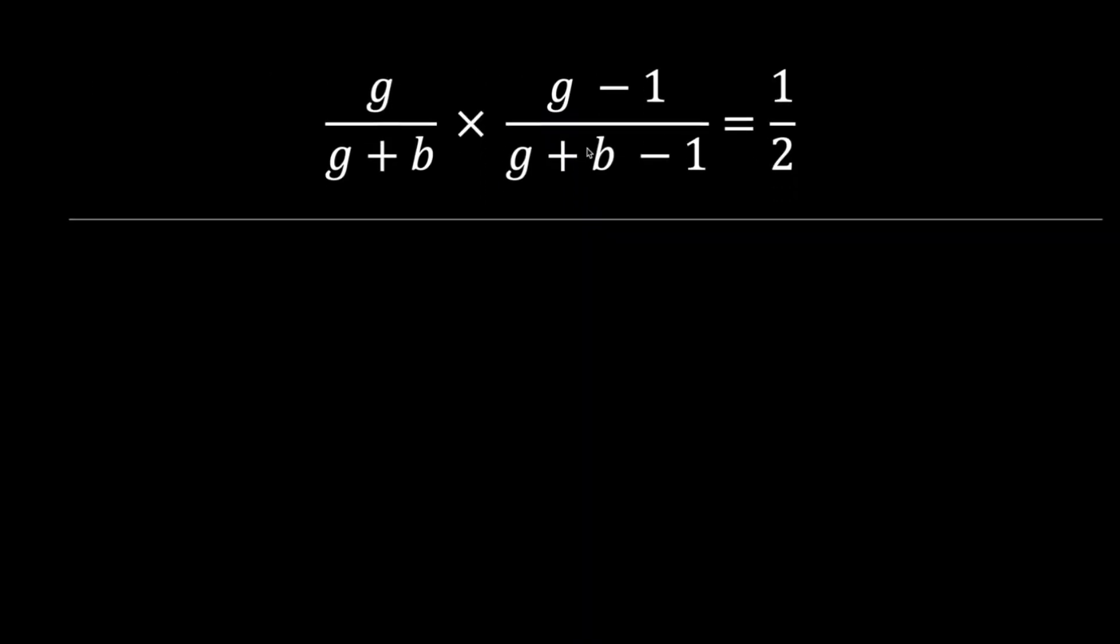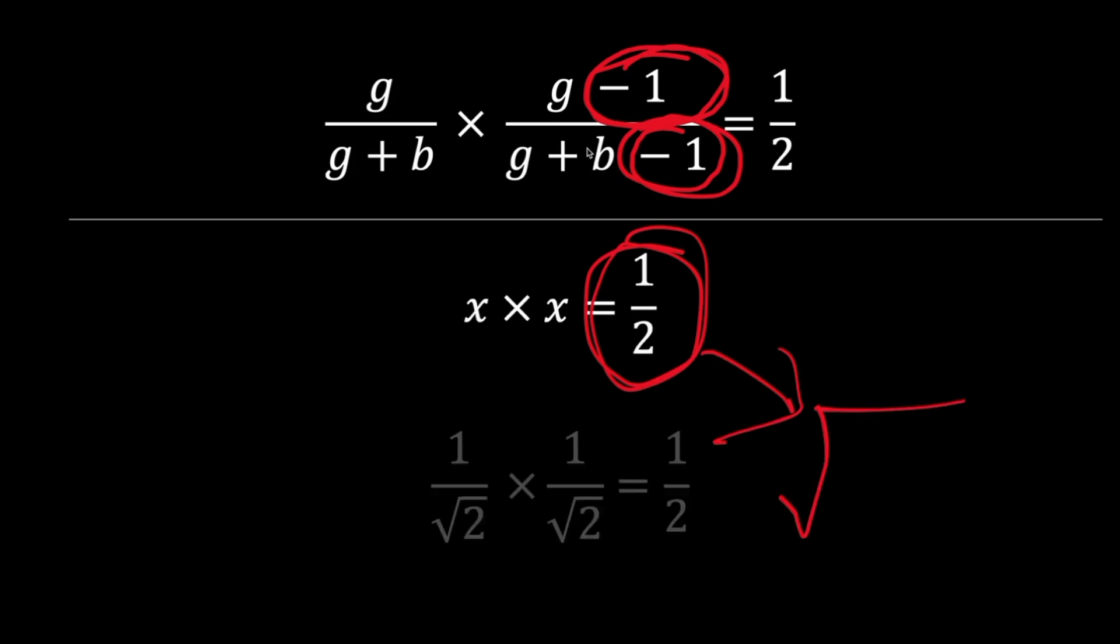Note that the two terms in the product are rather similar, discounting the subtraction of 1. Now what if they were identical? Let's call these hypothetical identical terms x. x times x equals 1 over 2. What two identical terms when multiplied yields 1 over 2? This would just be the square root of 1 over 2, giving 1 over square root 2 for the value of x.